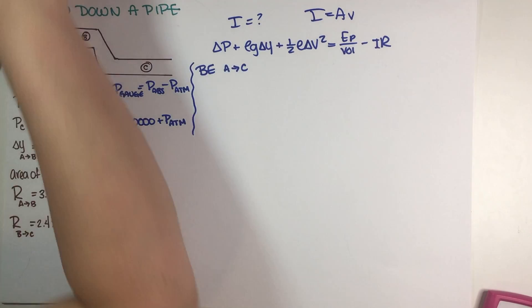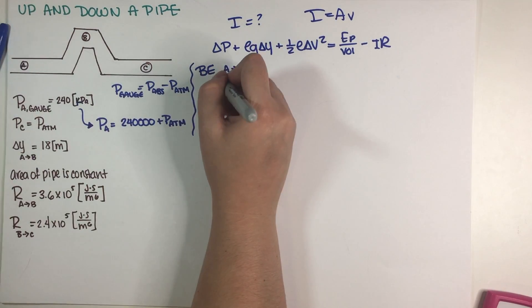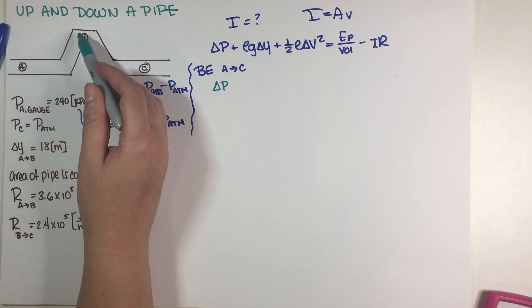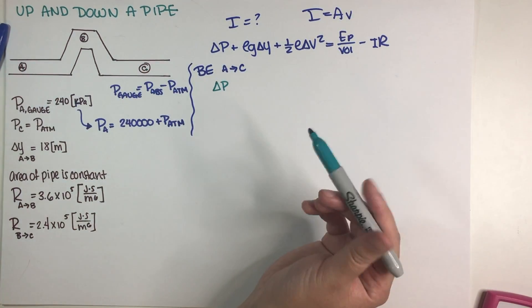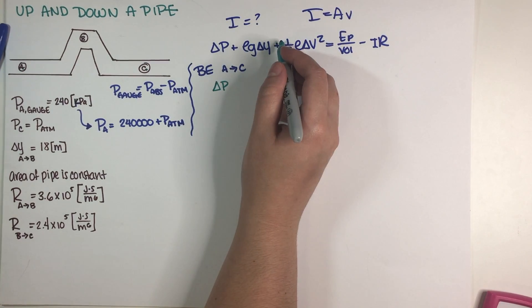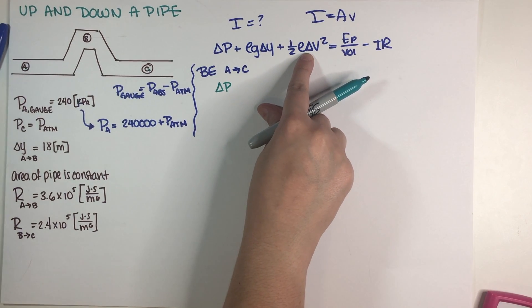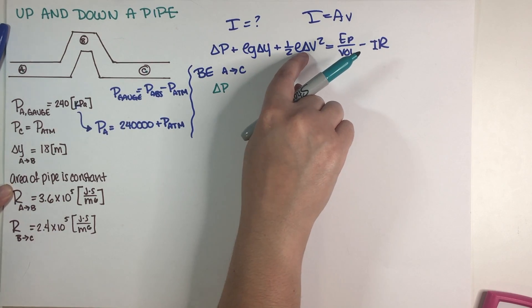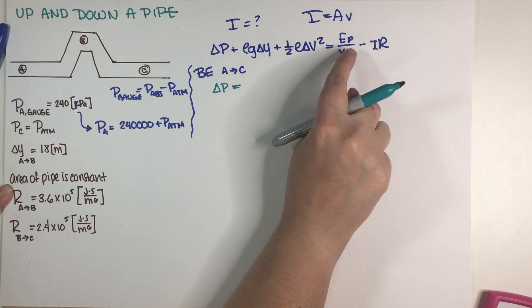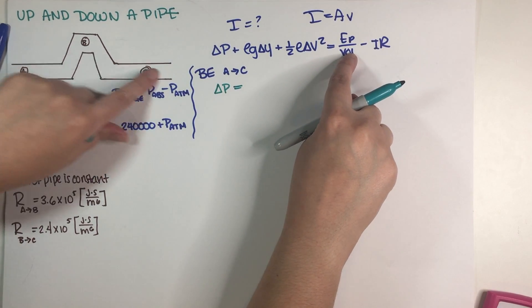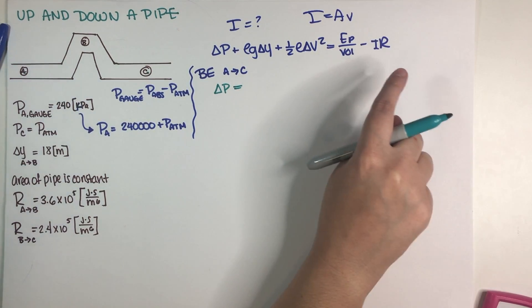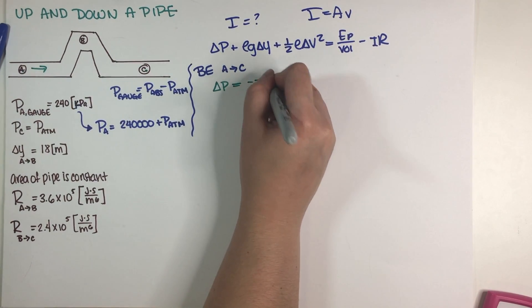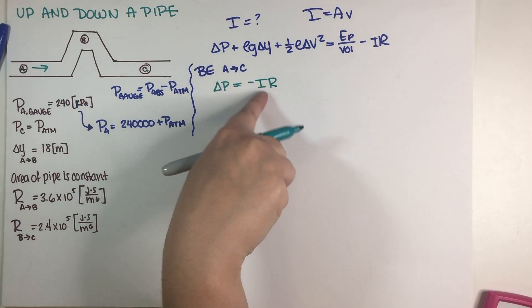Going back to the Bernoulli equation, we have a delta P term which stays. There is no change in height from A to C because even though the pipe goes up and down, A and C are at the same height, so the rho-g-delta-y term is zero. The area of the pipe is constant so velocity doesn't change, making the kinetic energy term zero as well. There is no pump between A and C, so that term is zero. We do have resistances, so the resistance term stays.